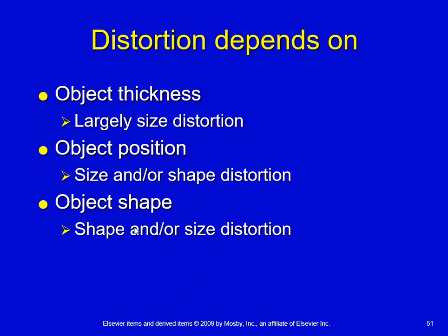Object shape can produce either a size or shape distortion. Shape distortion would occur if you had a hypersthenic patient whose femur was at an angle to the image receptor — if you were making an image of the patient's knee, hip, or femur, you're going to run into some foreshortening there.